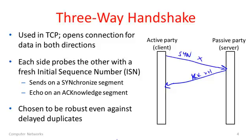In TCP you ACK the next expected byte, so you're now expecting x plus 1. The server will also send its own SYN and pick its own fresh initial sequence number y. These two operations can be combined in one segment as a little optimization. Then once this arrives at the client, the client will send back an ACK for y plus 1 for the other direction. Then both sides will have received the answers to their probe, so they'll both be happy that the connection is open.